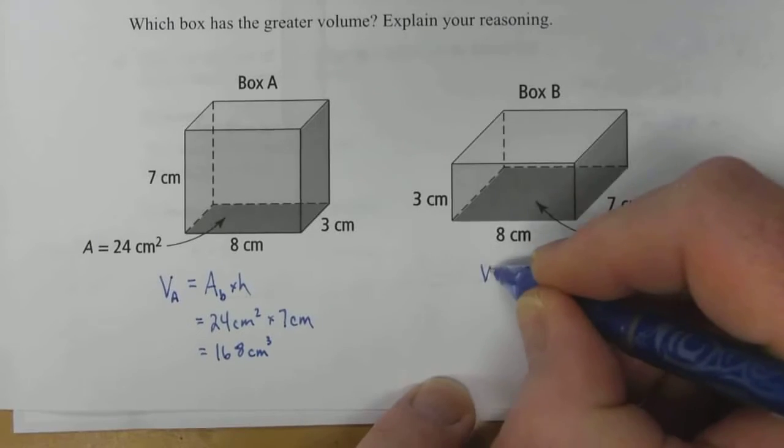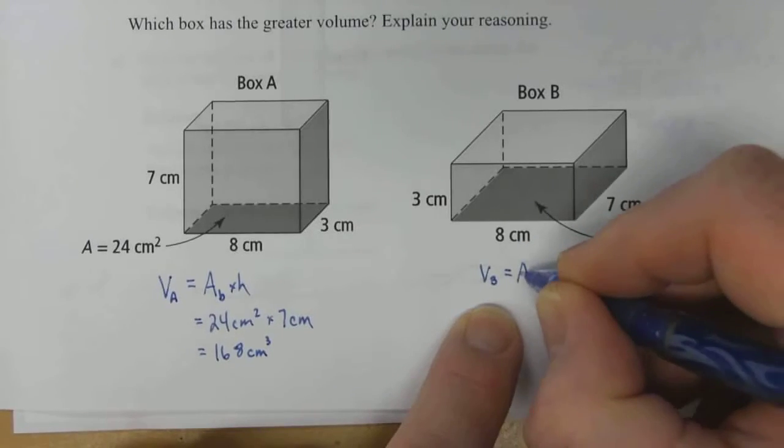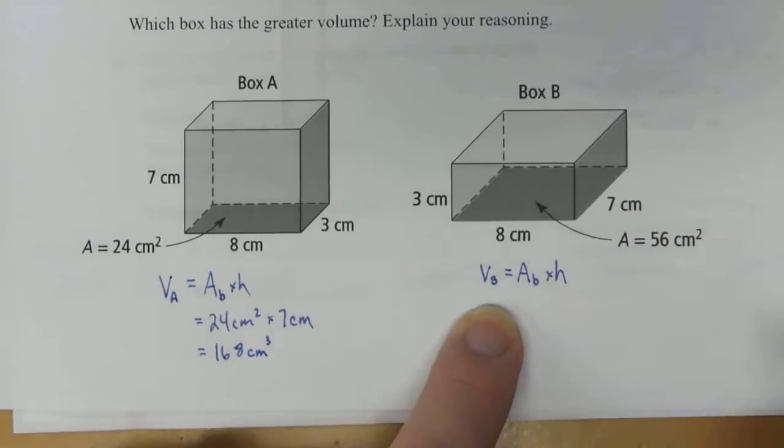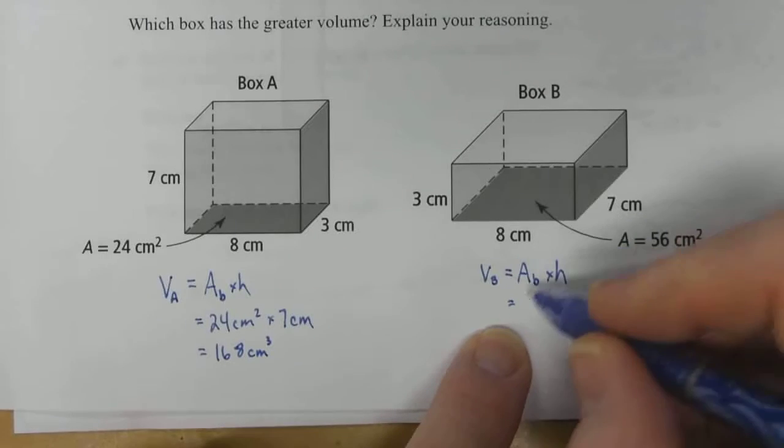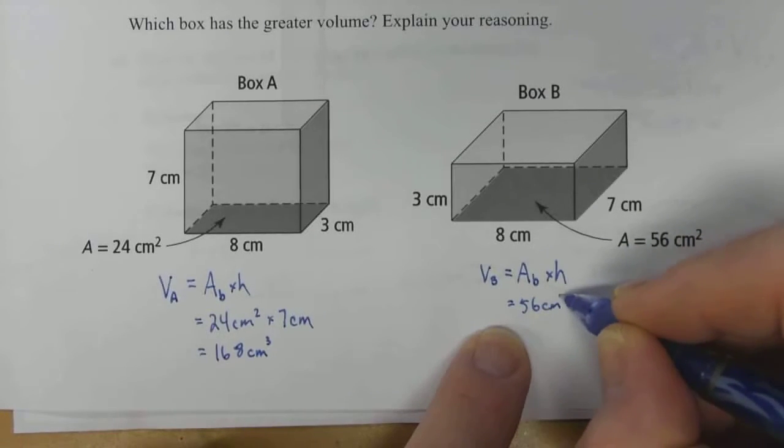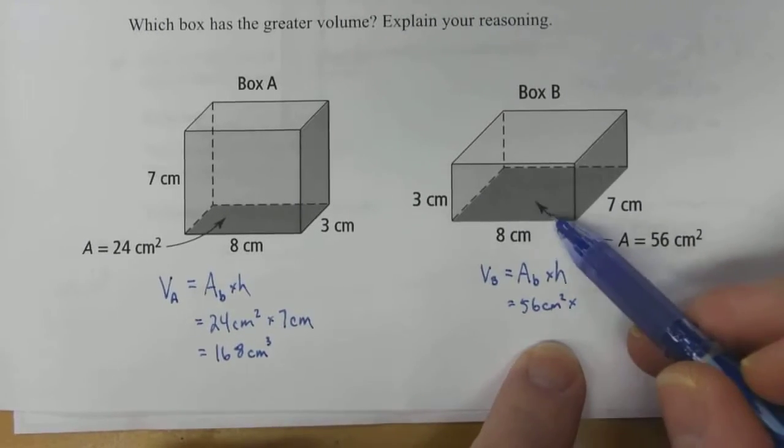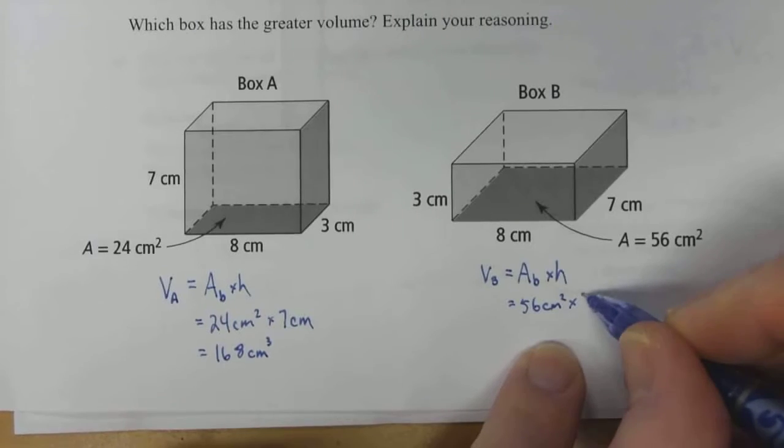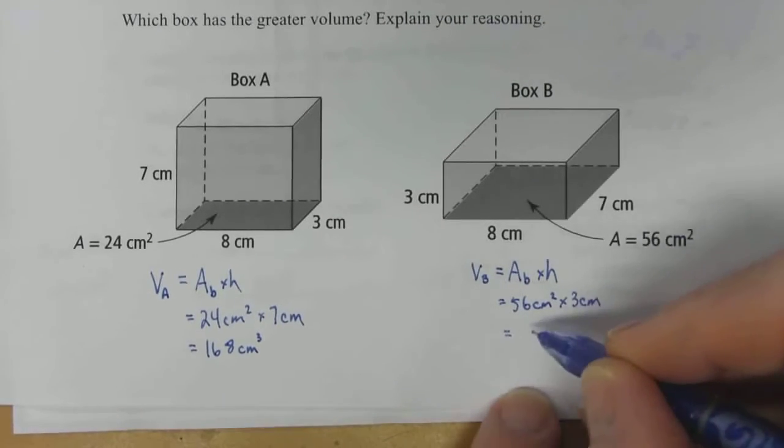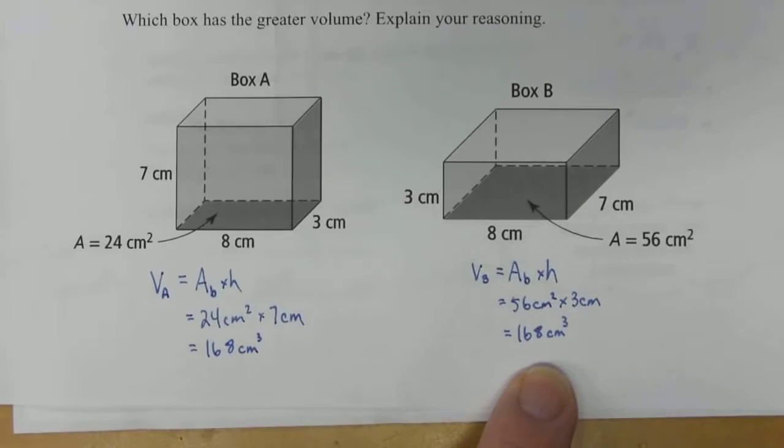Let's take a look at volume for box B. The area of its base times its height. Make sure you write out the formula first, then you do substitution. The area of its base is 56 centimeters squared times its height. If this face is the base, its opposite face is this one, and the distance between them in this case is 3 centimeters. 56 times 3 is 168 centimeters cubed.